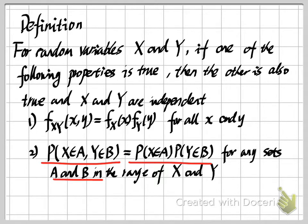Looking at the second requirement, you can see it is really similar to our material about independence of events. For independent events, we need that for all sub-collections, the probability of the intersection equals the product of probabilities. The second requirement here — for any sets A and B — is analogous to checking all sub-collections. So this second condition is a very smooth, parallel requirement derived from the definition of independence of events.